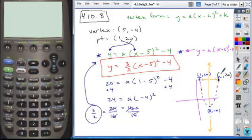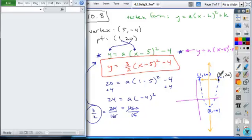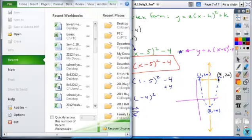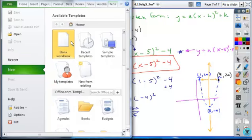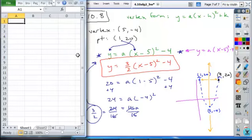And so if you're going to use your calculator or Excel to find this, here would be your three points that you'd use. And so if we were to plug those in, you could type in those points. So we have the point 1, 20, we have the point 9, 20, and we have the point 5, negative 4.